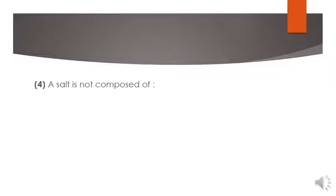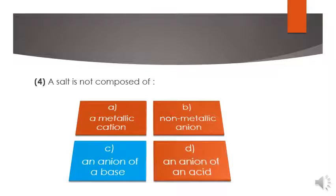The next MCQ is: a salt is not composed of a metallic cation, non-metallic anion, an anion of a base, or an anion of an acid. C is the right answer over here.